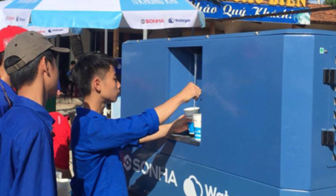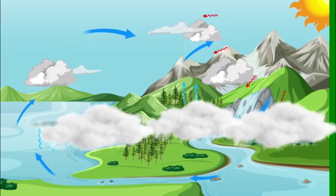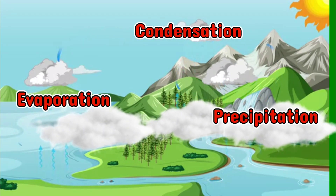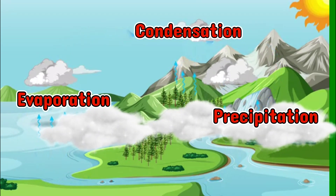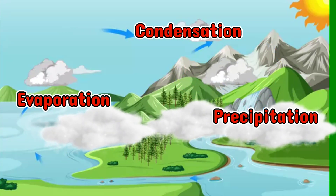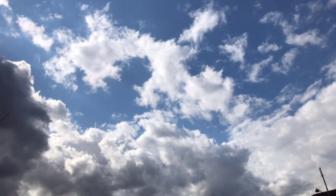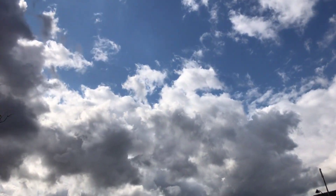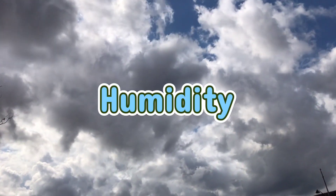Let's start with a quick science lesson. You're familiar with the water cycle, right? Evaporation, condensation, and precipitation? Well, AWGs essentially accelerate this process. The air around us contains water vapour, even in seemingly dry conditions. This is known as humidity.